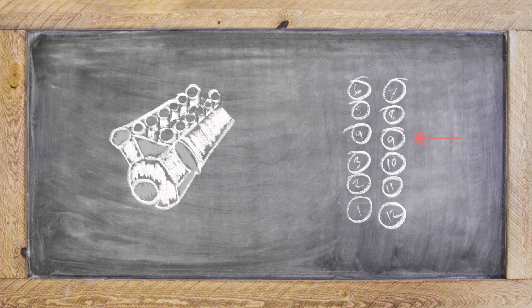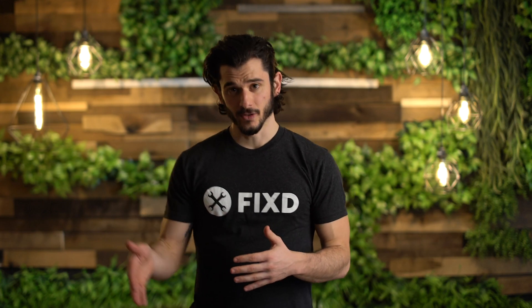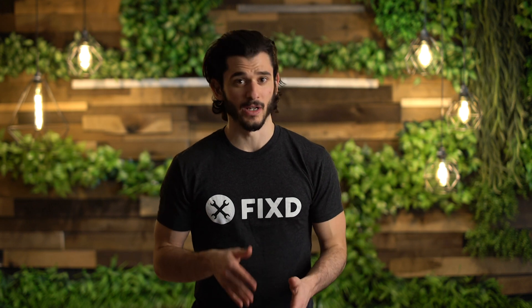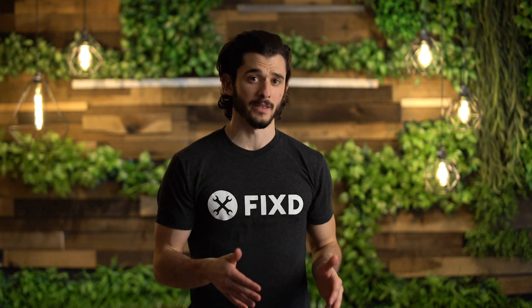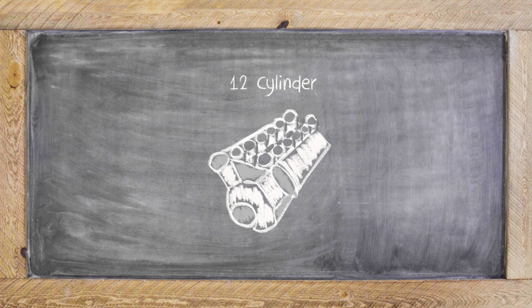P0309 is specific to that ninth cylinder. So it's the difference between say a P0309 or a P0300, which in that case is random multiple misfires. Since it's happening in that ninth cylinder, it's not going to be in a four-cylinder engine or a V6 or a V8. You're more than likely working with a V12 engine.